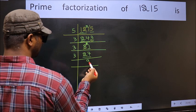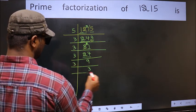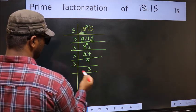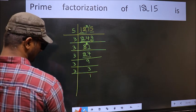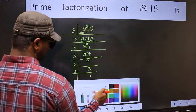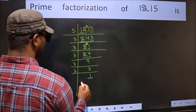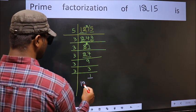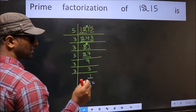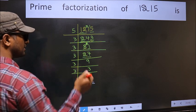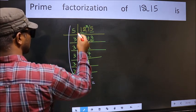Now we have 9. 3 times 3 is 9. Now we have 3. 3 is a prime number, so 3 times 1 is 3. So we got 1 here.